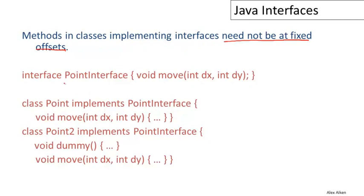So let's take a look at an example. Here's our point interface again. And now let's say we have one class point. We saw this one before that implements the point interface and it implements the move method, has to implement the move method. And then we have another class that also implements the point interface, but it also implements some other stuff. So it might implement some other methods that aren't part of that interface.